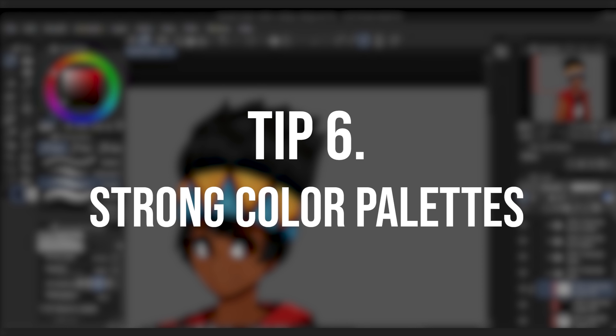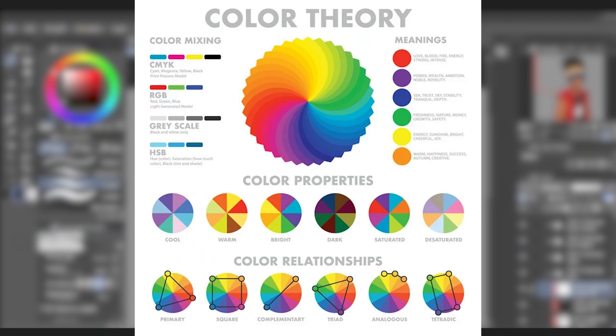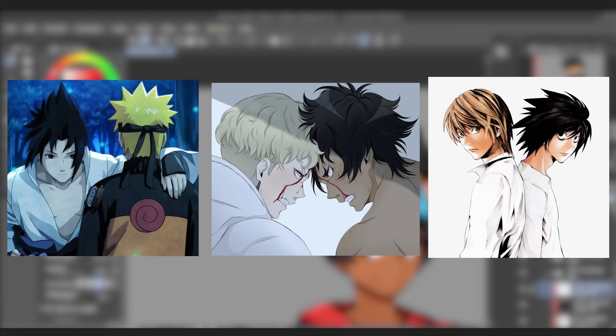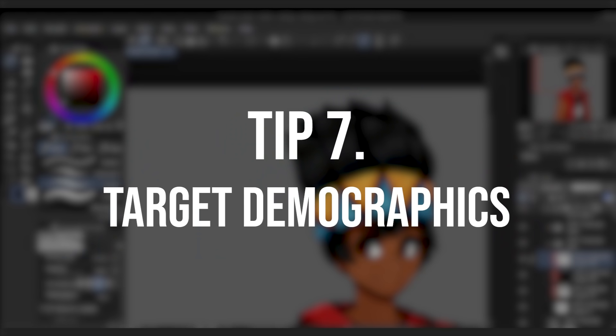My first tip is going to be about color hierarchy. Understanding color theory is essential for creating engaging character designs. Aside from knowing about primary and secondary colors, you need to understand color temperature, complementary colors, split complementary colors, monochromatic colors, analogous colors, and triadic colors. Certain colors convey different emotions and meanings. A character with an optimistic personality may have a brighter color palette versus a pessimistic character with a darker palette. This light and dark color combination can be seen in Naruto with Naruto and Sasuke, in Devilman Crybaby with Akira and Ryo, and Death Note with Light and L.